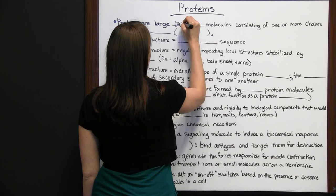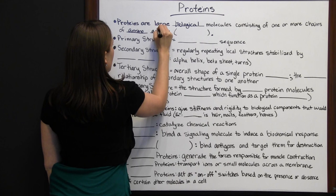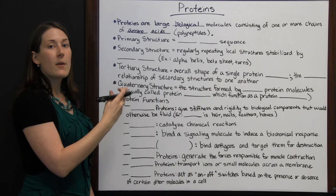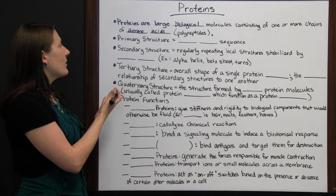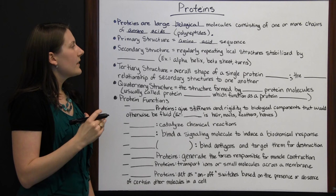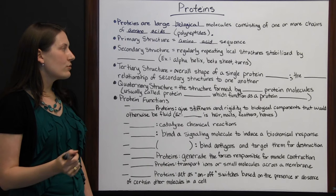Proteins are large biological molecules consisting of one or more chains of amino acids, known as polypeptides. A polypeptide is the whole chain of amino acids connected. The primary structure of a protein is its amino acid sequence — just the one polypeptide chain and the sequence those amino acids take.